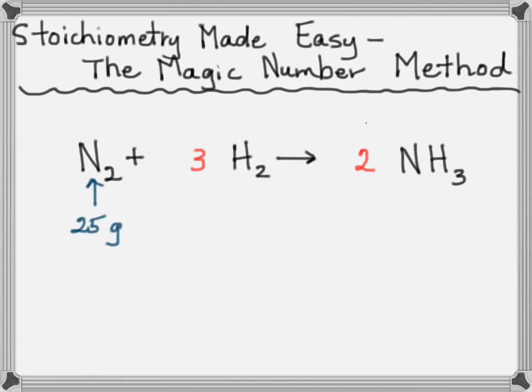Now let's say the problem gives you 25 grams of nitrogen, and they want to know how many grams of ammonia would be produced if you have plenty of hydrogen.